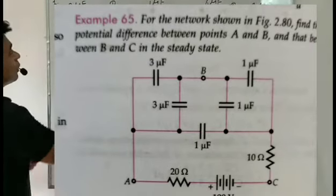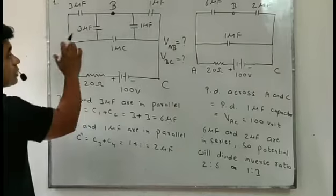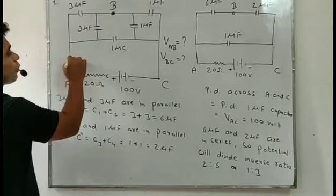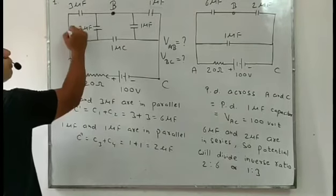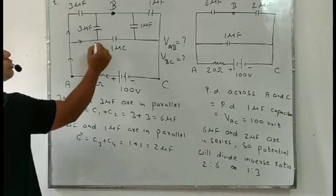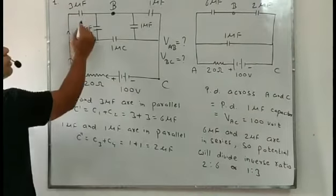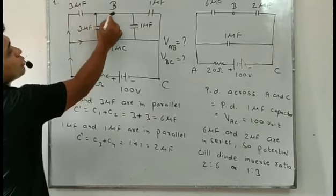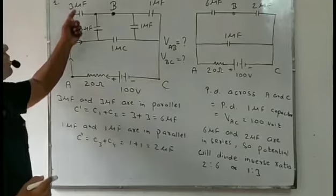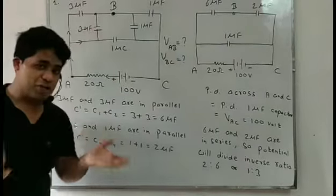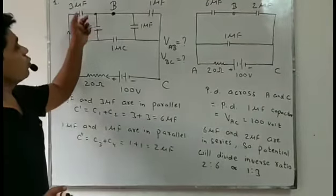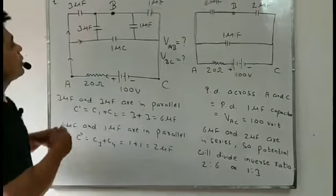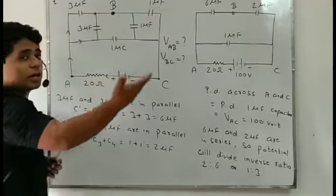We will start with this circuit, this closed loop. When you flow the charge, it divides into two parts — Q1 and Q2. Suppose when you flow the circuit, these two capacitors have different charge, so these two will be in parallel combination. So 3 microfarad and 3 microfarad — these two are having different charge, so they are in parallel combination.